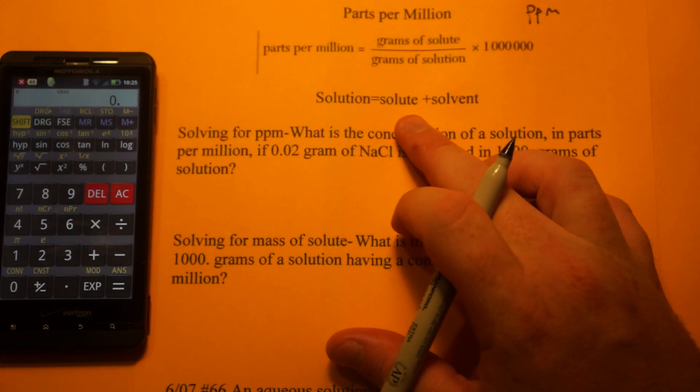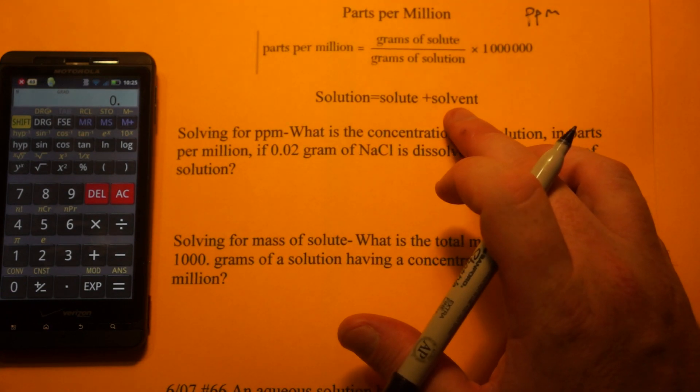that's grams of solute divided by grams of solution times 1 million. A solution is the solute, which is the stuff being dissolved, and the solvent, which is usually water.